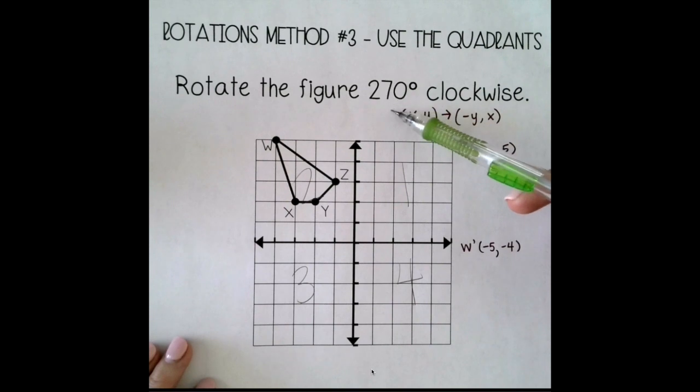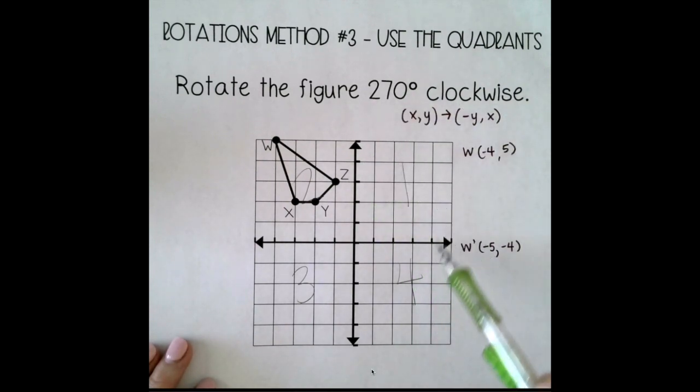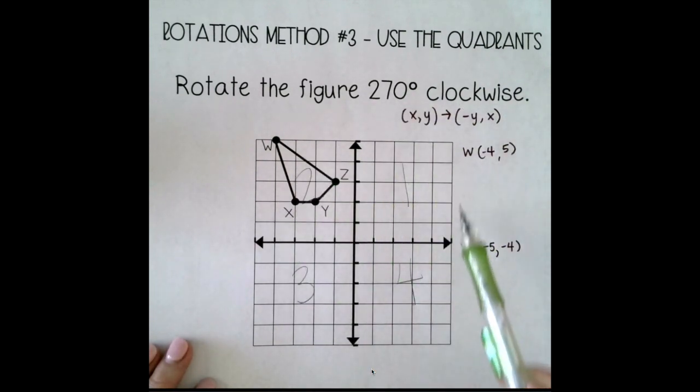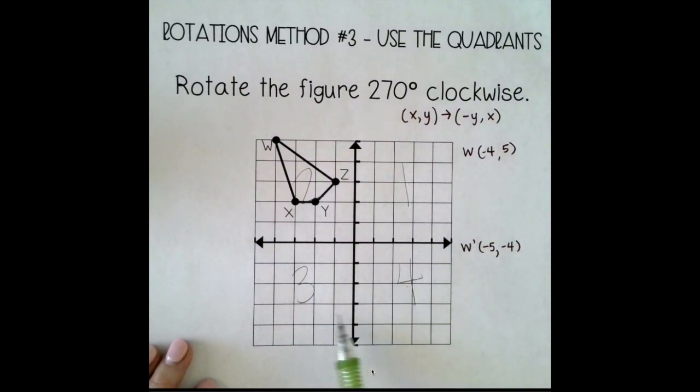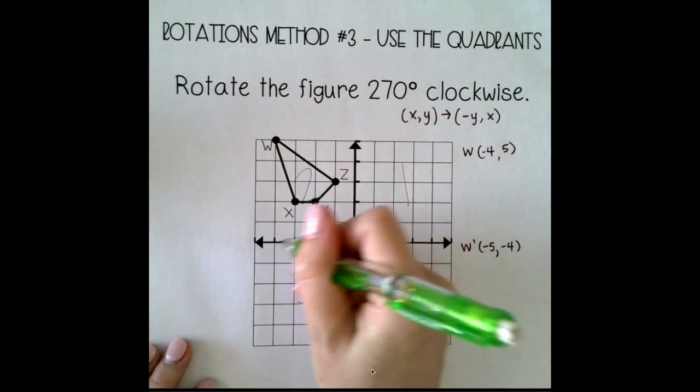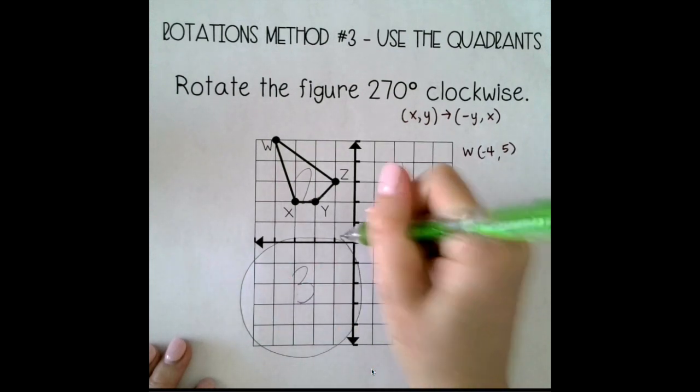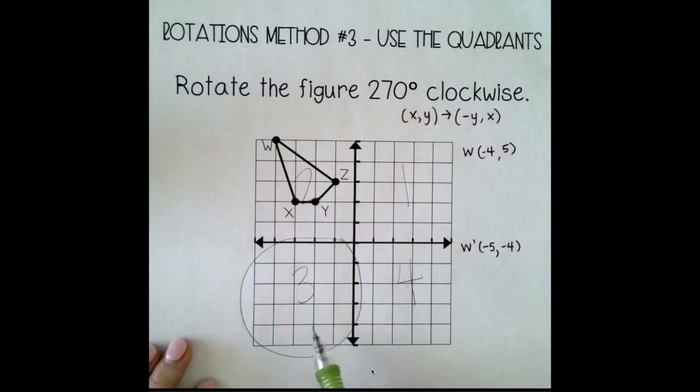So if I'm going 270 degrees clockwise, remember clockwise is like this. This would be 90, 180, 270. That means I want to land here in the third quadrant. That will tell me what my signs should be for all of my image points. So in the third quadrant, my signs are always negative, negative. And you can see that's what we got for our first point.